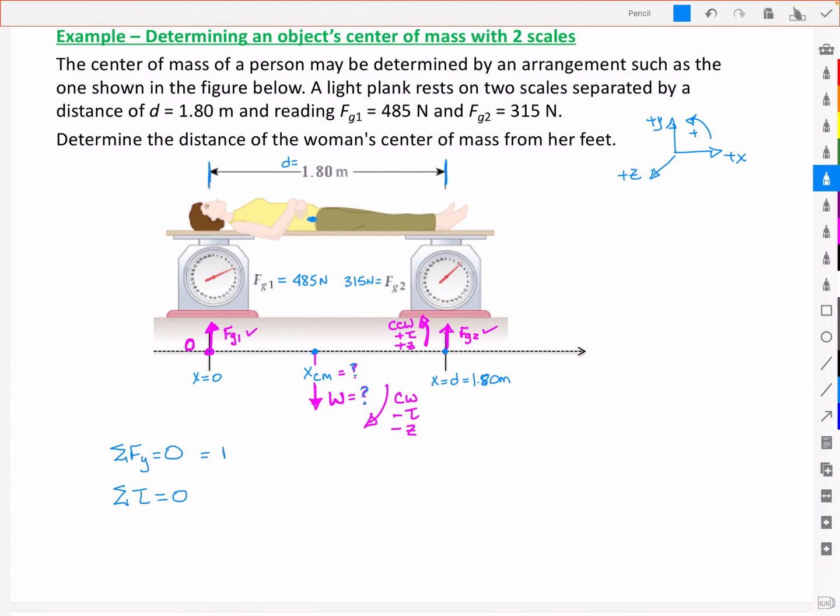I've got positive Fg1, positive Fg2, and negative weight all equal to zero. That's already telling me that the weight is just going to be the sum of those two scale readings.